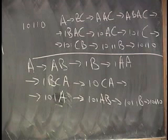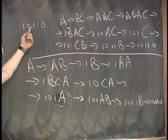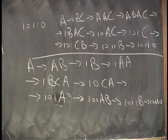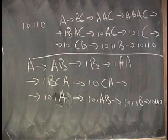It's ambiguous because there's a string, I exhibited one for you, that has two leftmost derivations. That's an ambiguous grammar. The trees for these two would look different, right?